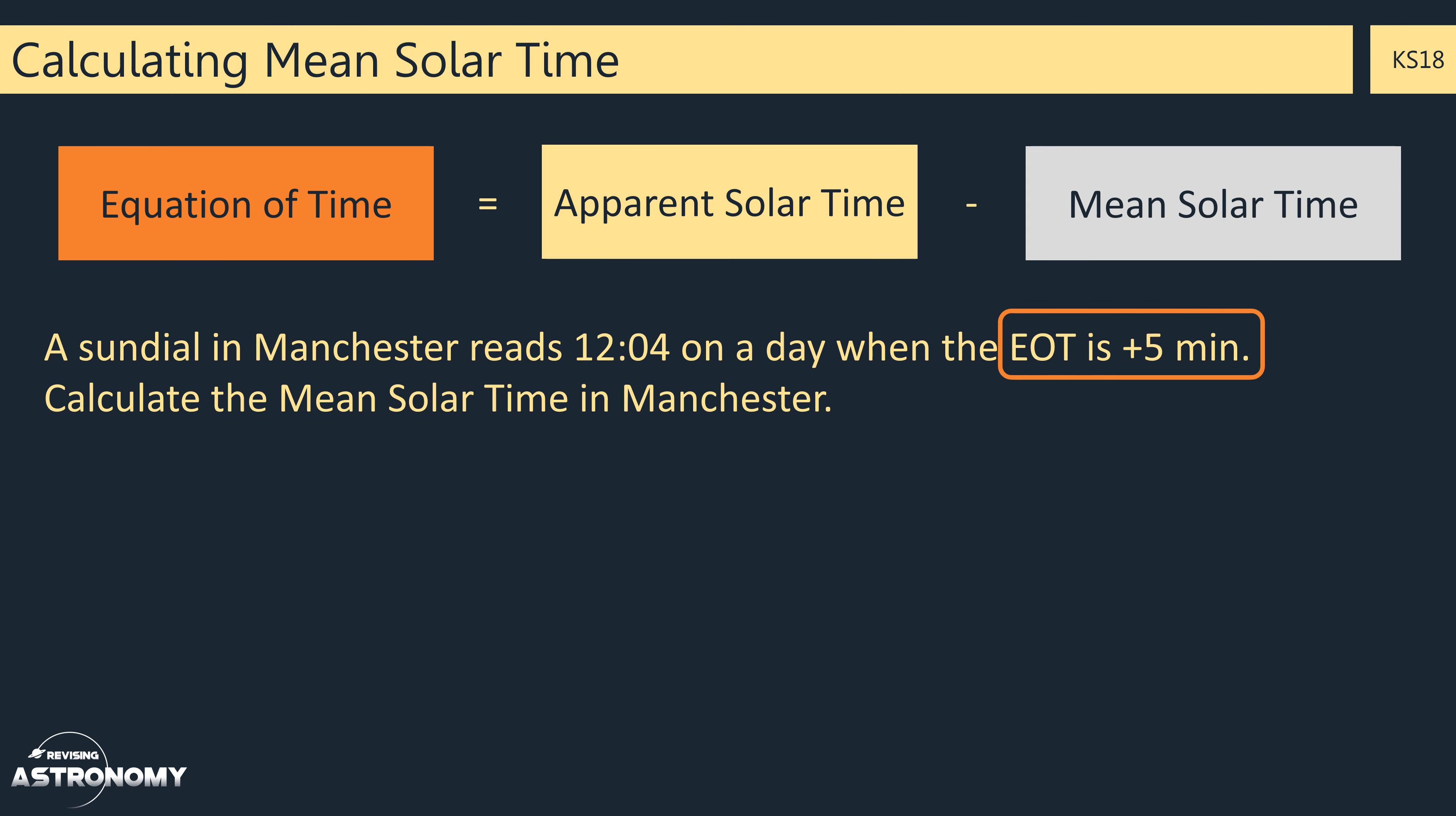Well, we'll use the equation. Equation of time equals apparent solar time minus mean solar time. And the question tells us that the equation of time is plus 5 minutes. So this equals the apparent solar time minus the mean solar time. The apparent solar time is 12:04, as that's what the sundial is telling us. And then we just need to rearrange the equation to work out the mean solar time.